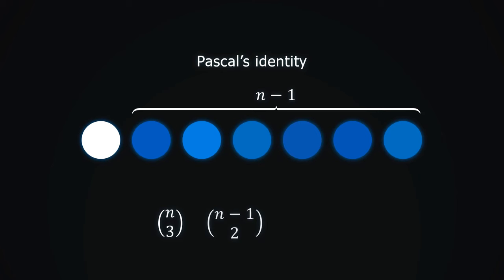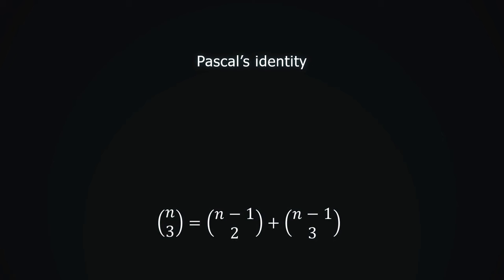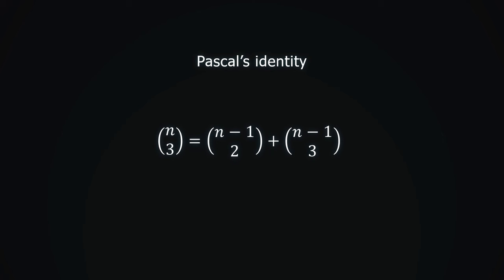If we leave it, then we have to take all 3 elements from the other n minus 1 elements. There are n minus 1 choose 3 ways to do this. Since both possibilities are correct, we add them up. Again, nothing special about the number 3. The same argument works for any number k.